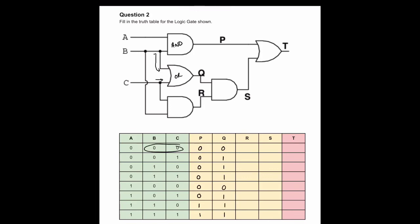Looking at R, it is the product of an AND gate taking inputs from C and B. The AND gate requires both inputs to be one to produce a one, so zero and zero produces a zero. We then look at S, which is the product of another AND gate taking inputs from Q and R. We look at the Q and R columns to work out S, completing all the intermediate steps.